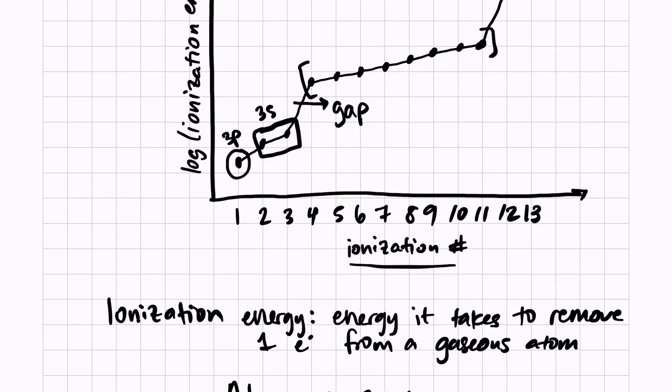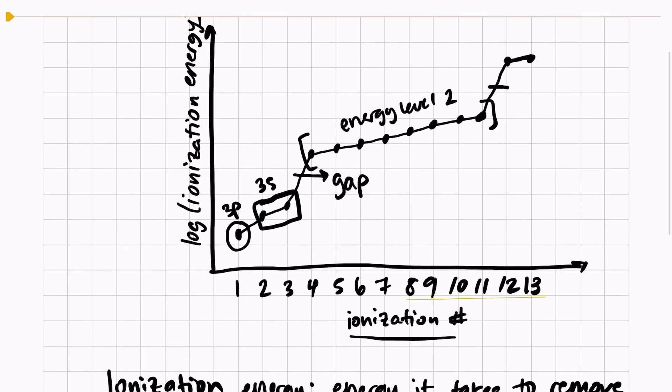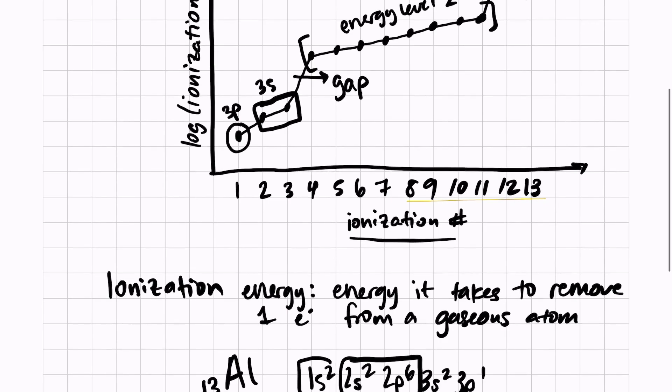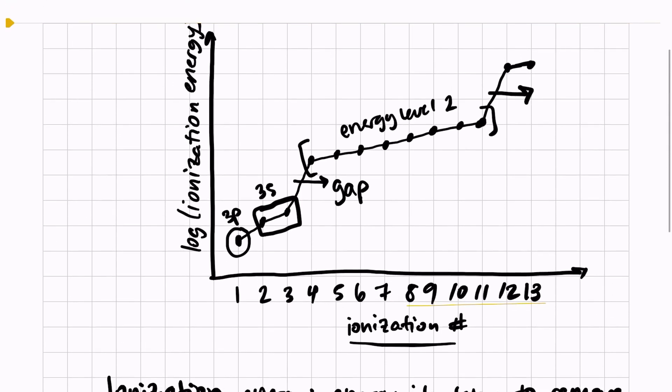These electrons here—let's see how many there are: one, two, three, four, five, six, seven, eight—this corresponds to energy level 2, because if we look at the electron configuration, there's eight electrons in energy level 2. Then there's another huge gap, and that takes us to energy level 1, which is the closest to the nucleus, the 1s energy level. It's the closest to the nucleus, so logically that should take the most energy to remove those two electrons.